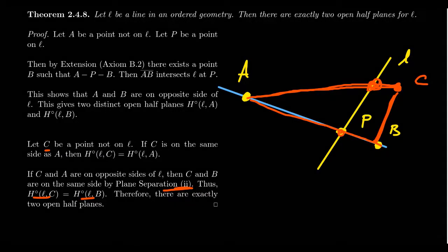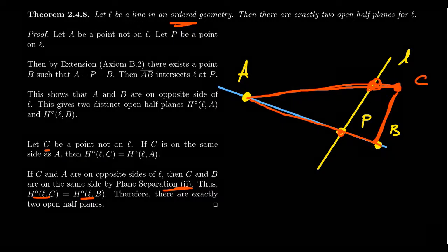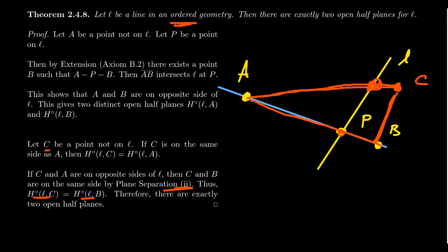That brings us to the end of lecture 10 about the betweenness axioms. This is not our last conversation about betweenness — the next several lectures will be about ordered geometry and the betweenness axioms. In particular, the next video will discuss why it's called ordered geometry and what partial order we're referring to. Subscribe to the channel to get updates, and if you have any questions, feel free to leave them in the comments below.